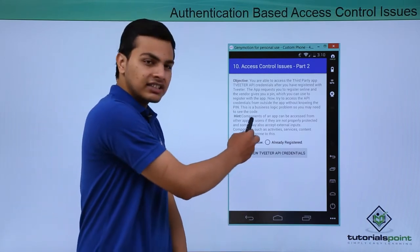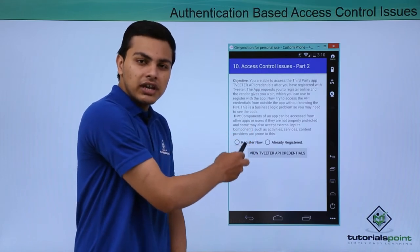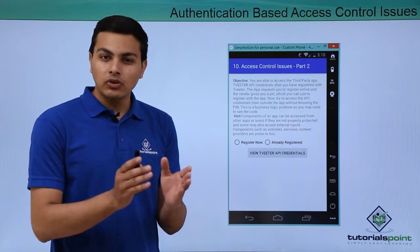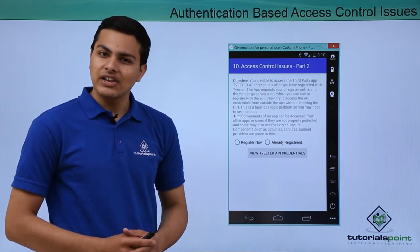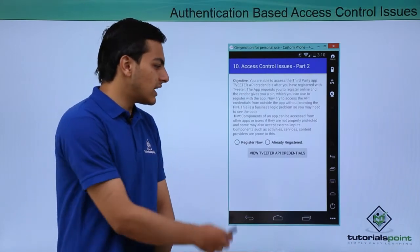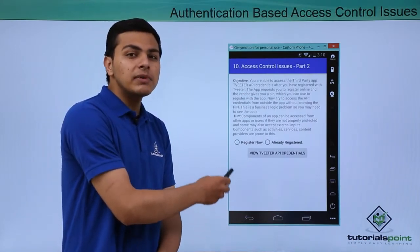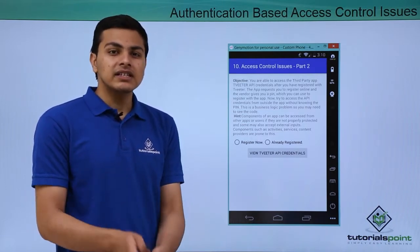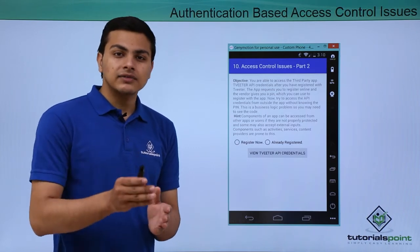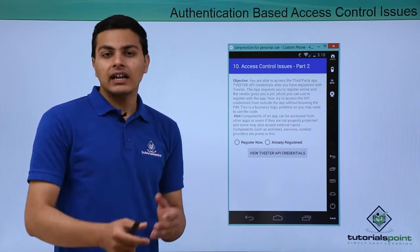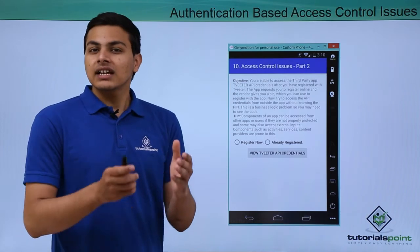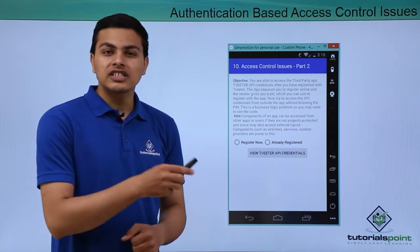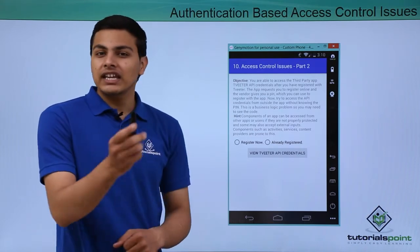This issue in DIVA is named Access Control Issues Part 2. Our objective is the same as the previous one — we have to access the protected resource which contains Twitter API credentials. However, here there is a trick: we can only view those credentials after entering a PIN. If the application authenticates us with the correct PIN, we can see the credentials. We will see how to bypass this authentication check.